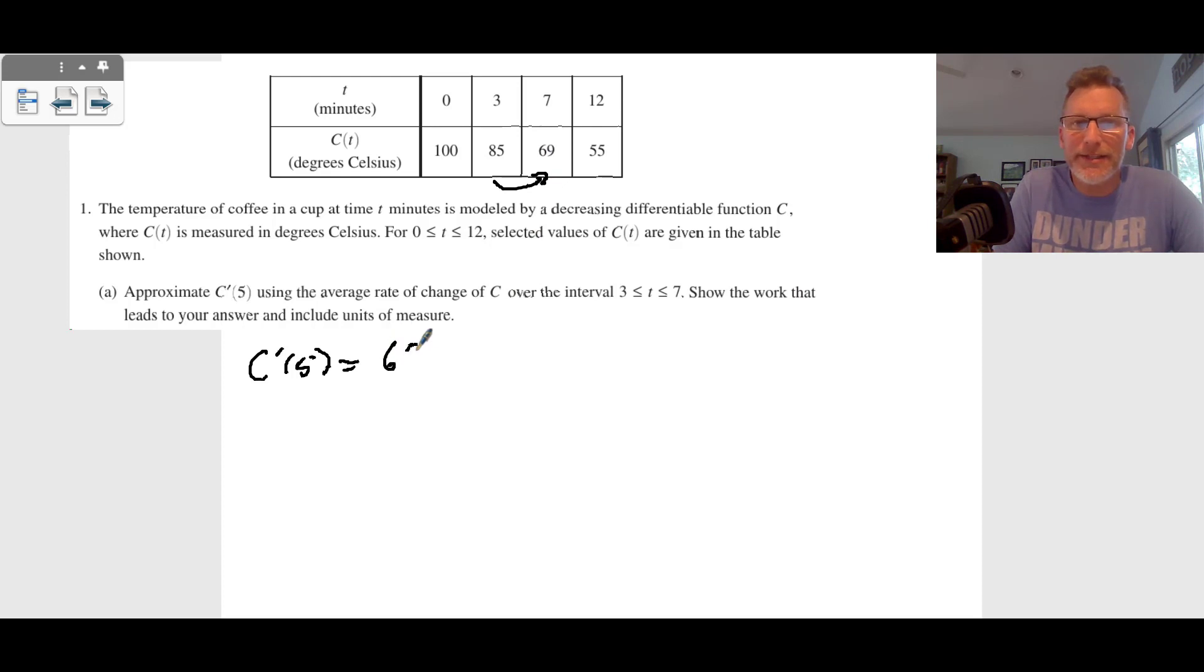So we're going to take 69 degrees Celsius minus 85 degrees Celsius, all over seven minutes minus three minutes. And that will end up giving me, when I do this calculation in my calculator, remember I can use my calculator for this, negative four degrees Celsius per minute, and make sure we want to have the answer as well as the units for that.